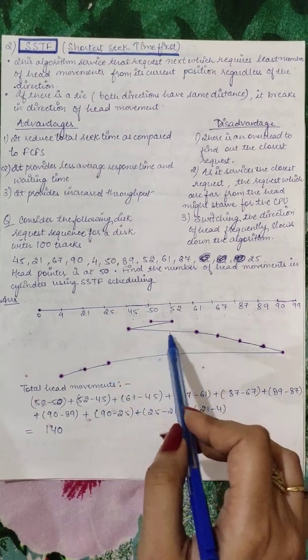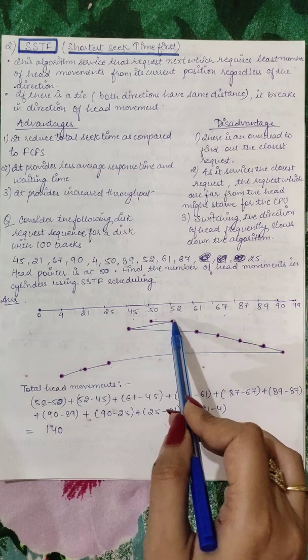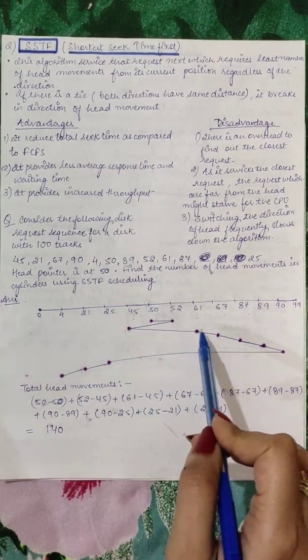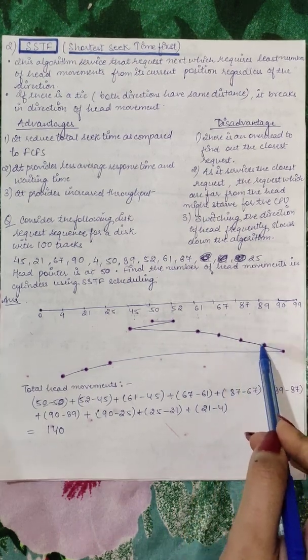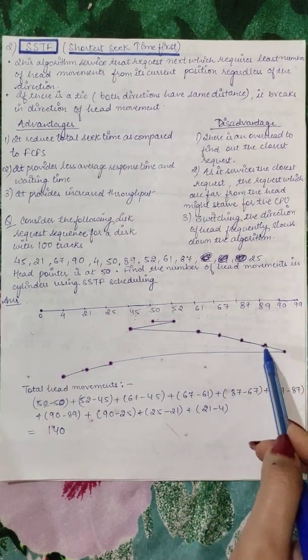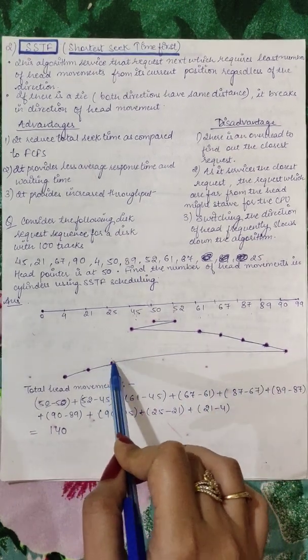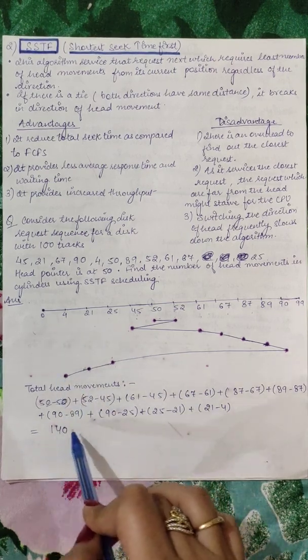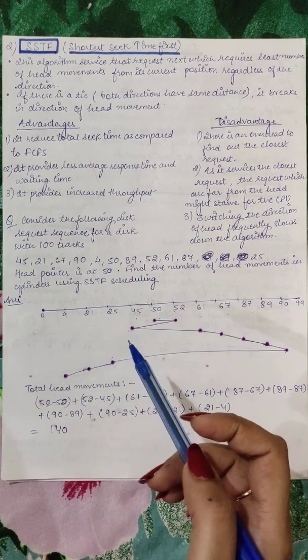Similarly, here we will find differences: 52 minus 50, plus 52 minus 45, plus 61 minus 45, plus 67 minus 61, plus 87 minus 67, plus 89 minus 87, plus 90 minus 89, plus 90 minus 25, plus 25 minus 21, plus 21 minus 4. And we will total it, then we will get the total number of head movements.